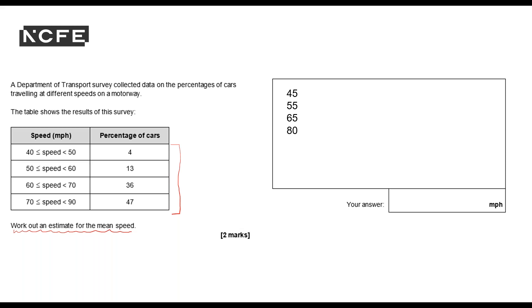Because 90 takes 70 is 20 divided by 2 is 10. And add that on to my lowest value, gives me 80. Now I need to multiply by the percentage. 47 and then find the totals.